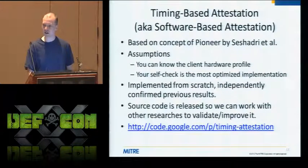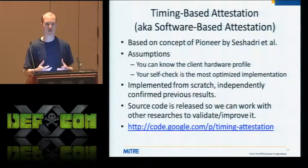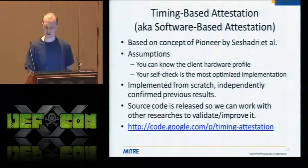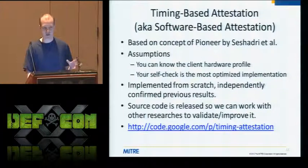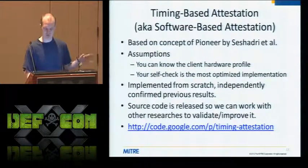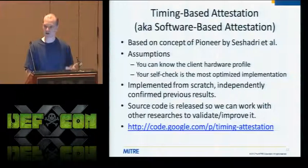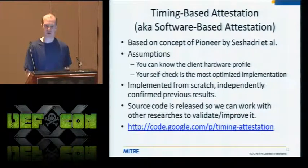We call this timing-based attestation. Attestation is just a fancy way of saying you're providing some evidence about the state of something — you're attesting to the integrity of your code. This is based on academic work called Pioneer, out of Adrian's group at CMU. We consider our specialization to be taking other people's research and making it more practical. Pioneer was good — it was for Linux — but it had some assumptions we wanted to loosen to get this working in a corporate environment.